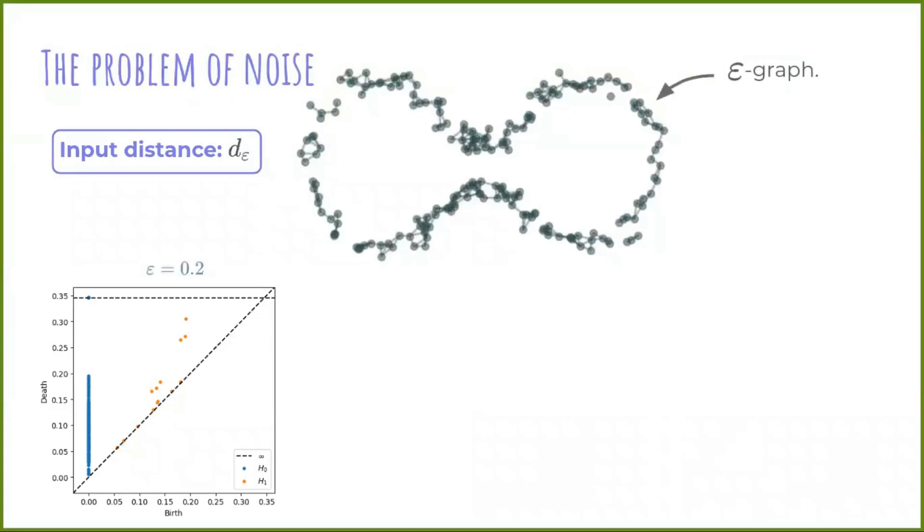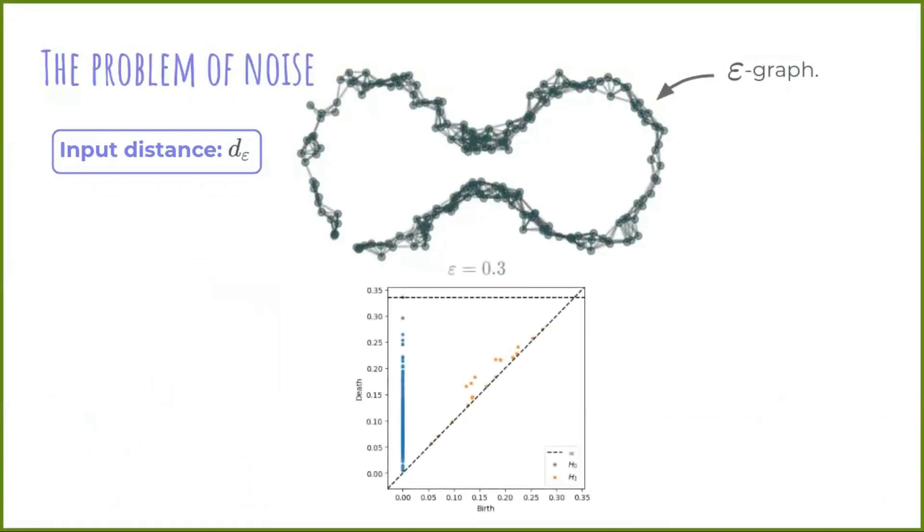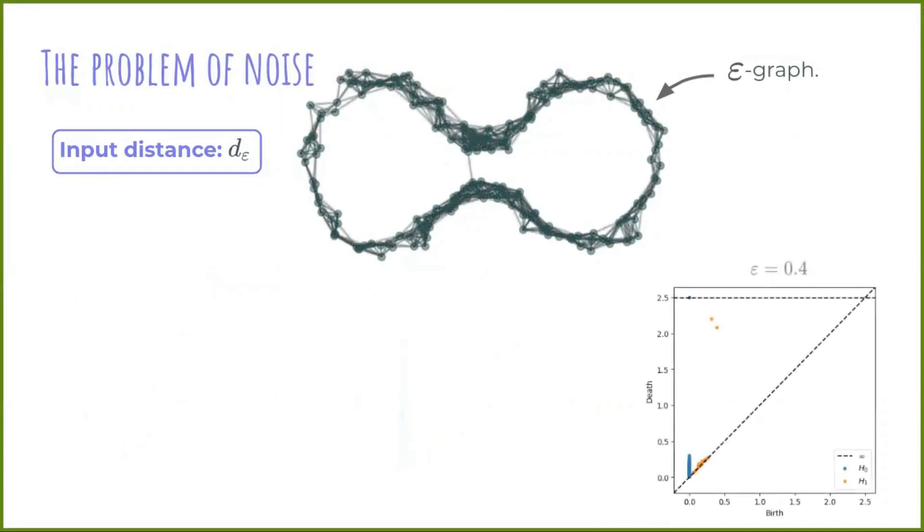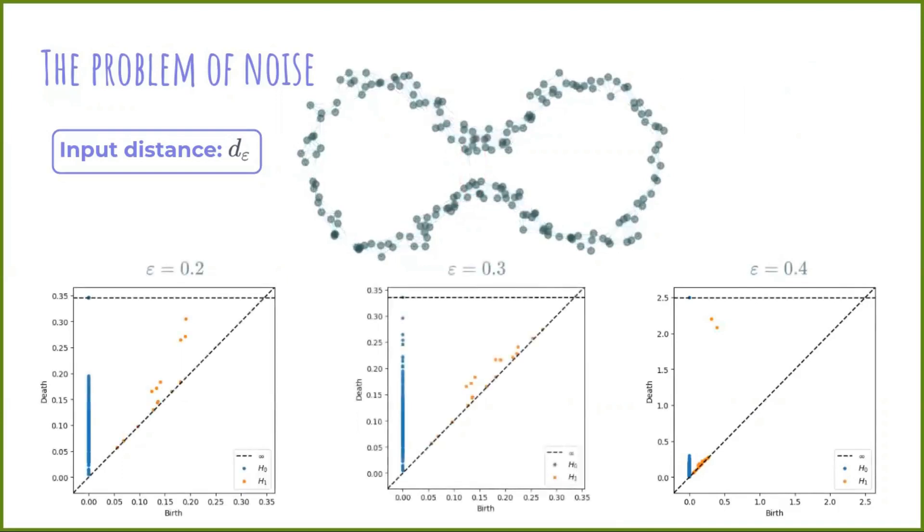Let's inspect the epsilon graph. For small values of epsilon, it's too disconnected or not enough connected to form the cycle. But for larger values of epsilon, unwanted shortcuts start to appear in the bottom region. So it seems difficult to find a good value of epsilon for this example. And also, we can see that this estimator is not robust and highly dependent on epsilon.